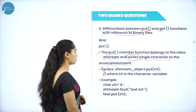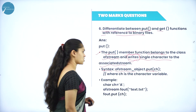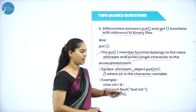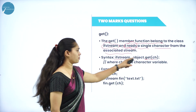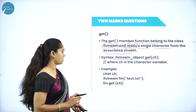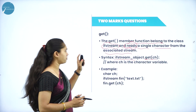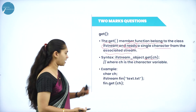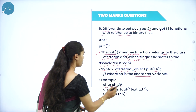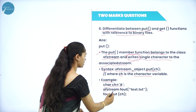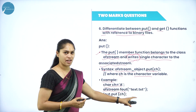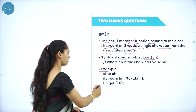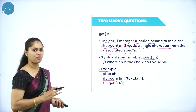The syntax for put is: ofstream_object.put(ch), where ch is a character variable. The syntax for get is: ifstream_object.get(ch). For example, declare a character variable 'a' and an ofstream object 'fout', open the file, then access the put function using the ofstream object. Similarly, use the ifstream object to access the get function. These are the differences between get and put.